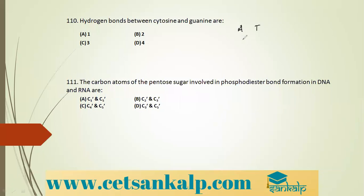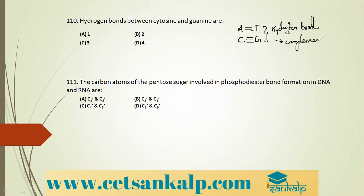Q: Hydrogen bonds between cytosine and guanine in DNA. The base pairs in DNA are A–T and C–G. Between cytosine (C) and guanine (G) there are three hydrogen bonds; between adenine (A) and thymine (T) there are two hydrogen bonds. These are complementary base pairs. Correct option: three hydrogen bonds between C and G.